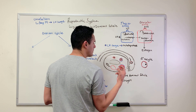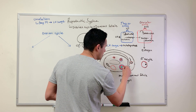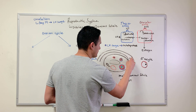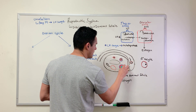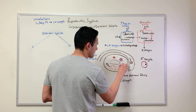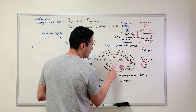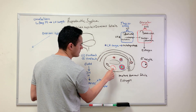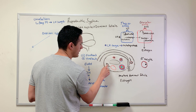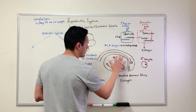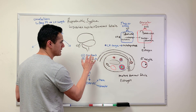Ovulation happens around day 14. What will happen is we bring this secondary oocyte here into the fallopian tube. Once we have this oocyte in the fallopian tube, the leftover product is what's found in the next phases — this here is what's known as the corpus luteum, and this is what's known as the corpus albicans.